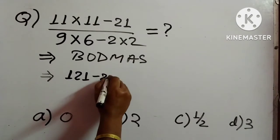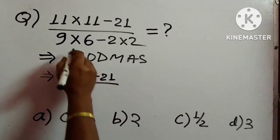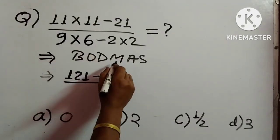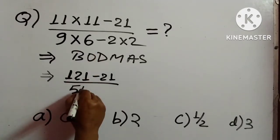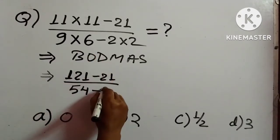Then again, you have to multiply first. 9 into 6 is 54 minus 2 into 2 is 4.